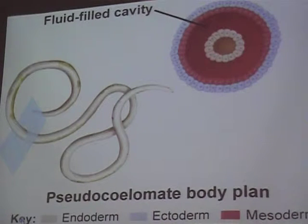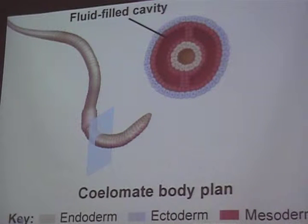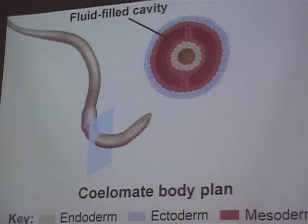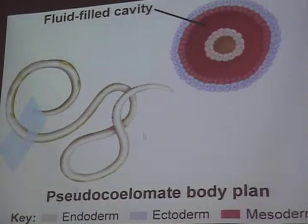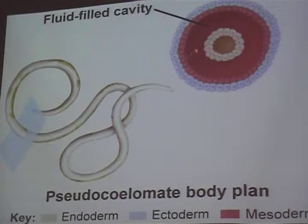A pseudocoelom means a false body cavity. You have ectoderm on the outside, then mesoderm, then the pseudocoelom, then the endoderm. Look at the difference between the two: there's the true body cavity and there's the false body cavity. The true coelom has mesoderm on both sides of the body cavity. The pseudocoelom has mesoderm only on one side — the other side is endoderm. That's basically the difference.